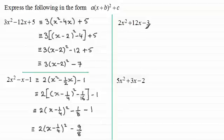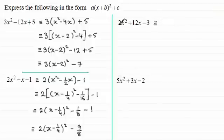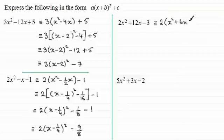We've got two more examples here. This one is fairly straightforward; this one involves a lot more fractions. Pause the video and I'd strongly encourage you to have a go. Welcome back. With this one, all we do is pull out 2 at the front of a bracket across the first two terms. These are nice terms because they're divisible by 2, so this is a relatively easy example. So you're going to have 2 bracket x squared plus 6x, and then the minus 3 on the end. Now we complete the square across x squared plus 6x.